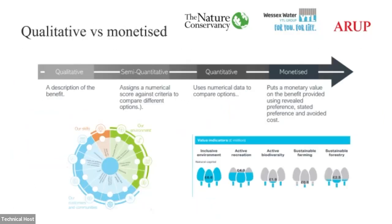There are different maturities of this approach that we can take. We can go from a very qualitative approach — purely a description of the benefit — through to something semi-quantitative, such as using multi-criteria analysis, through to quantitative where we use different data to compare options, all the way through to monetization. It's worth saying that these can also be used in combination, so you may choose to have a monetization alongside a qualitative assessment of the benefit, noting that some things shouldn't necessarily have a monetary value placed upon them.